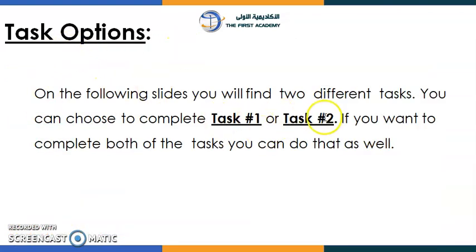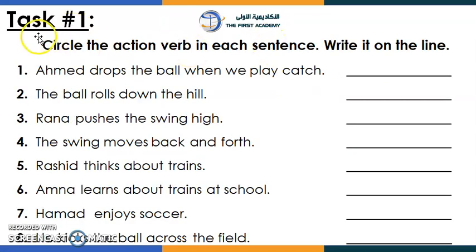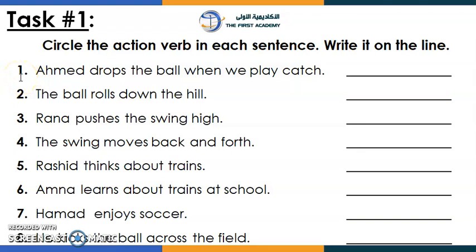You have task number one and task number two, so you can choose one of them or do both. For task number one, let's read the question together: circle the action verb in each sentence and write it on the line. So we have two instructions — the first action is to circle, and the second one is to write.